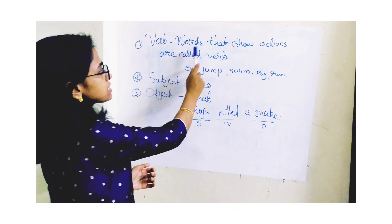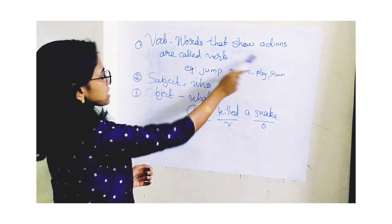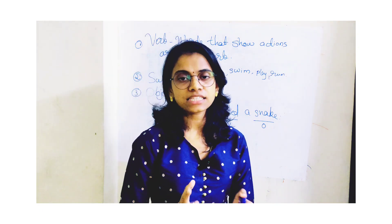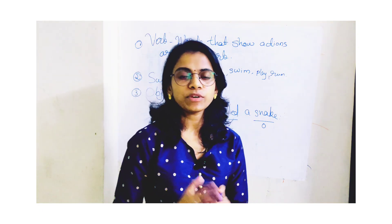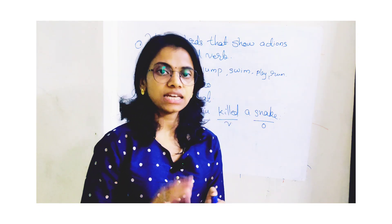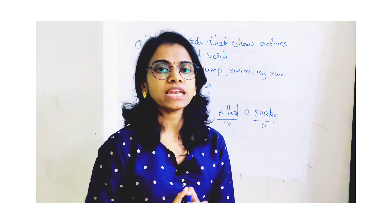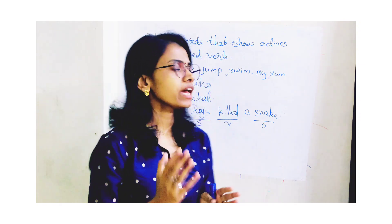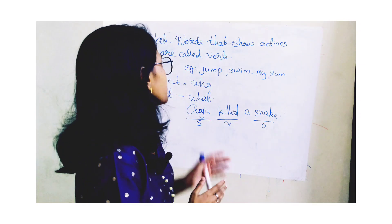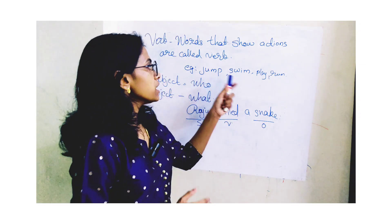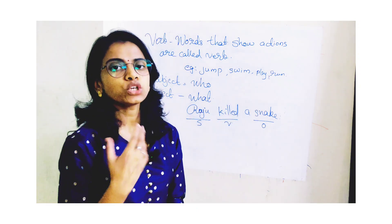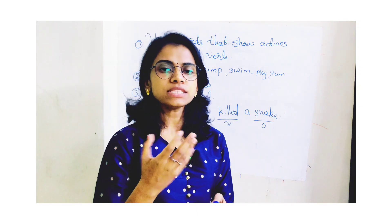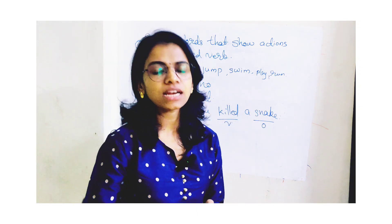Words that show actions are called verbs. When we are doing actions, we are using a verb — a kriya — which means jump, swim, play, run, talk, drop. We are using verbs.